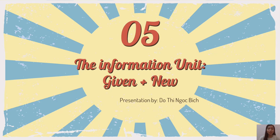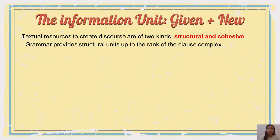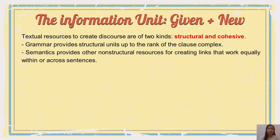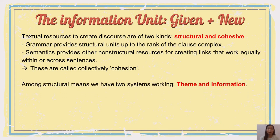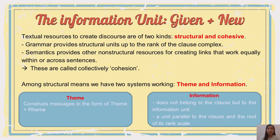Good morning teacher and everyone. Now I will continue our presentation with the information unit: given and new. Textual resources to create discourse are of two kinds: structural or cohesive. Grammar provides structural units up to the rank of the clause complex. Semantics provides the other non-structural resources for creating links that work equally within and across sentences — these are called collectively cohesive devices. Among structural means we have two systems: theme and information. We can choose a message in the form of theme and rheme, but the information system belongs not to the clause but to the information unit.